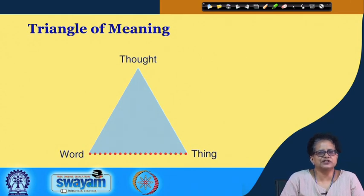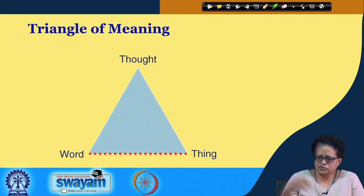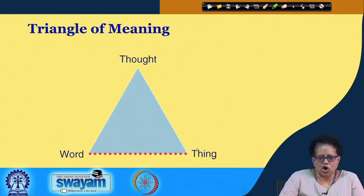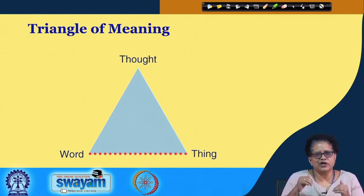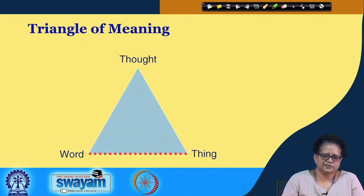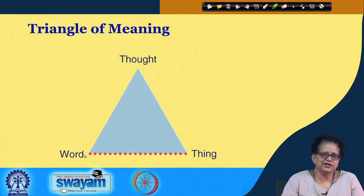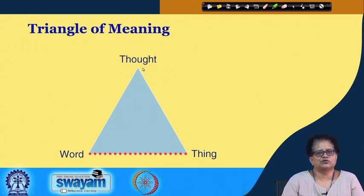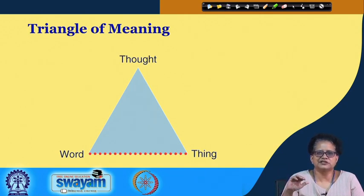This is a pictorial representation of the triangle of meaning proposed by Ogden and Richards. On the top you have the thought. Let us say you see a dog or a cat — that is the thing: a four-legged, furry, soft creature, small or big, domesticated. Then there is a word for that: D-O-G or C-A-T. And then there is the thought I was describing — a four-legged creature which is a domesticated animal or a pet.